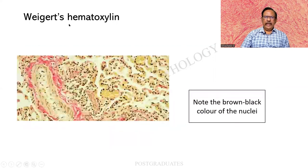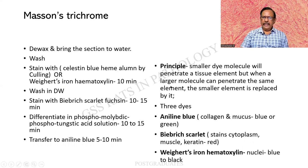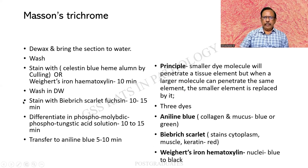This is Weigert's haematoxylin. As mentioned earlier, haematoxylin is a nuclear stain — in this case it can be brown to brownish-black in color. The principle of Masson's Trichrome is that a smaller dye molecule will penetrate the tissue element, but when a larger molecule can penetrate the same, the smaller element is replaced by it. It is composed of aniline dye, Biebrich scarlet, and Weigert's iron haematoxylin.